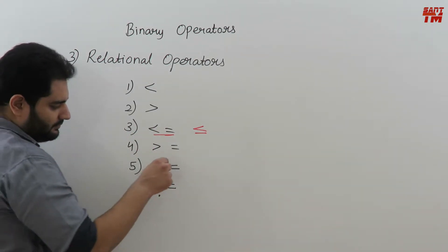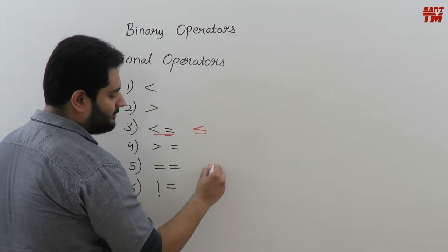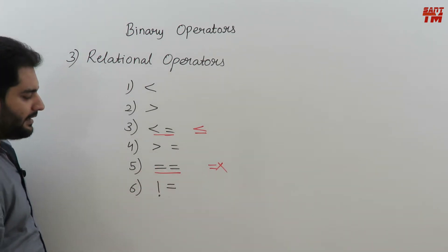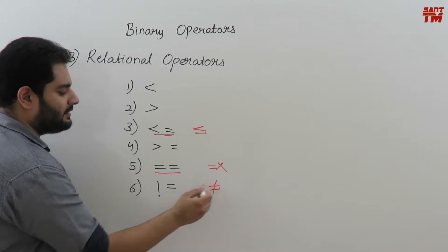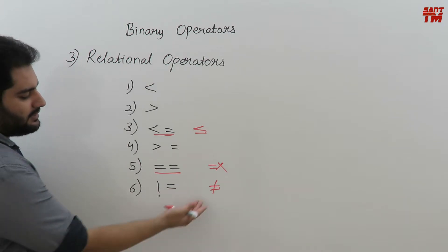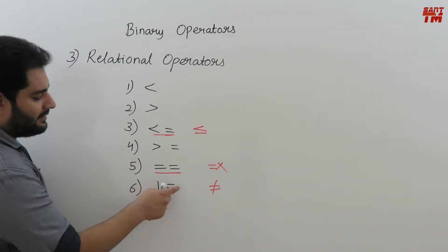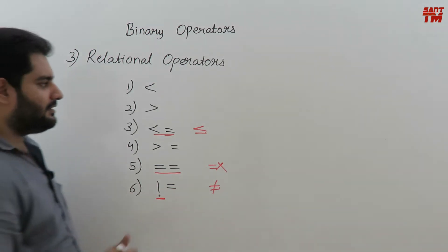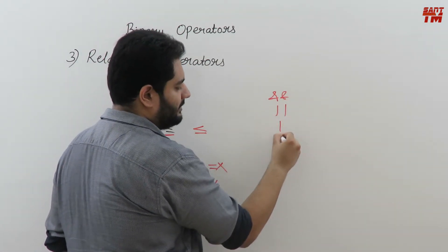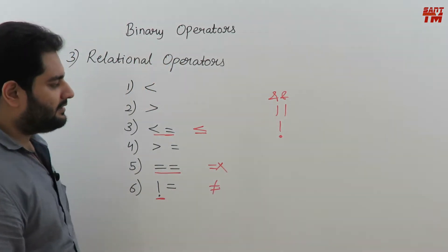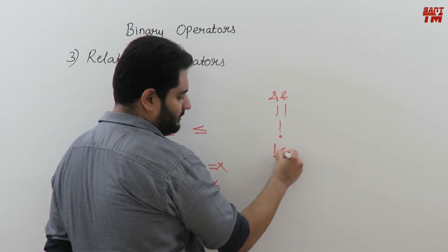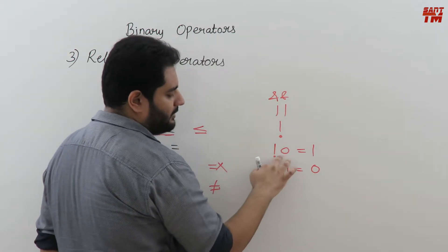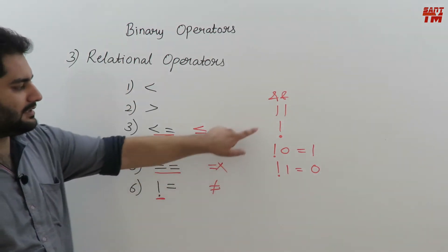Also note: there are actually three logical operators — AND (&&), OR (||), and logical NOT (!). Logical NOT reverses the value: NOT 0 gives 1, NOT 1 gives 0. That means not-false equals true and not-true equals false. This is how logical NOT works. It is also the same symbol used in the not-equal-to operator (!=).